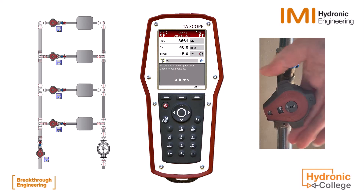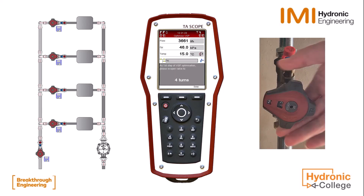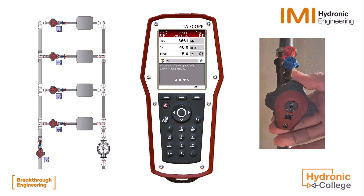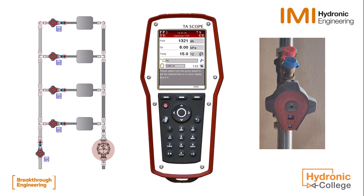Open the partner valve to the indicated number of turns and press Done. Adjust pump speed to get the required flow or a value slightly above it.